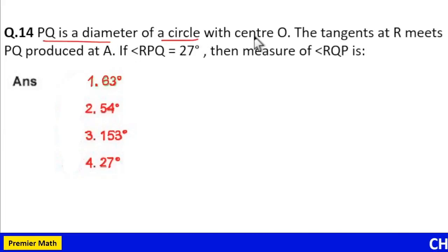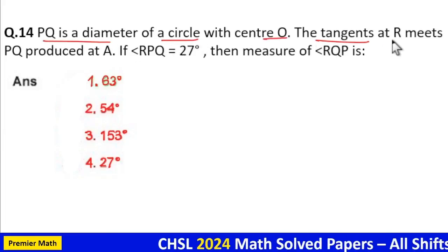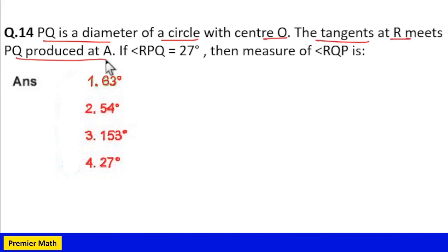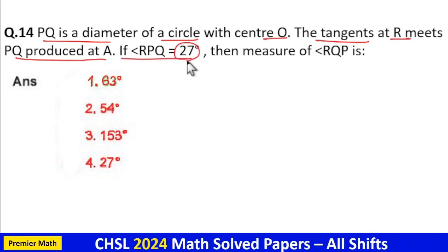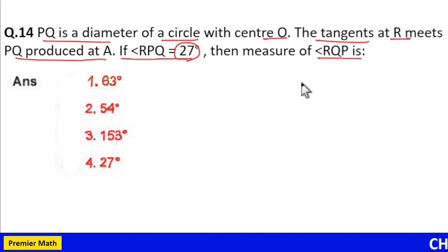PQ is a diameter of a circle with center O. The tangent at R meets PQ produced at A. If angle RPQ is 27 degrees, then the measure of angle RQP is?